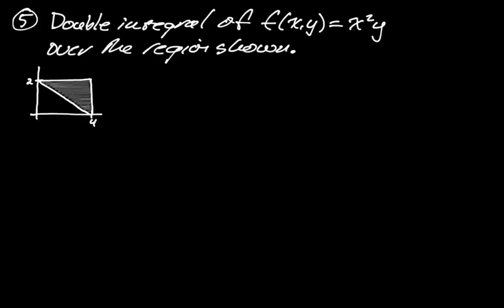First up, we want the double integral of f(x,y) = x²y over the region shown. One thing people freak out about is they don't know what f(x,y) looks like, but the key thing is you don't need to know. What you really need to know is the region you're integrating over, because that's where all of the work takes place. So here we have a picture, and x is going from 0 to 4 for this region. X likes to go from left to right.